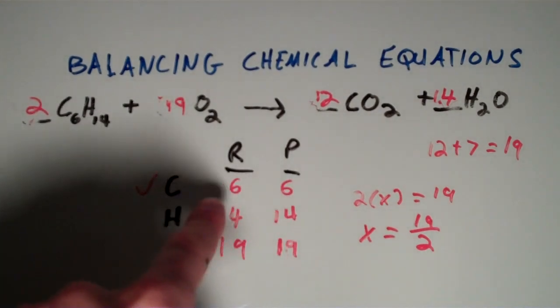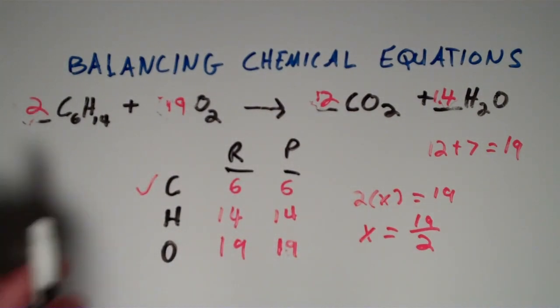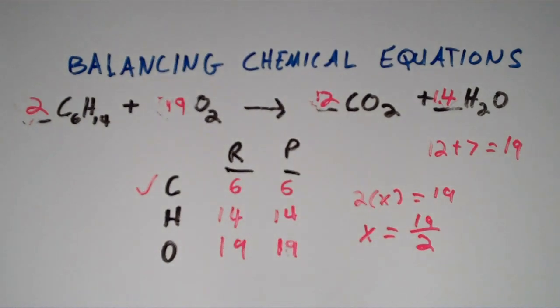This table here is simply everything is just multiplied by two, and that gives you the lowest whole number ratios of everything here. So I hope this helps, and good luck to you.